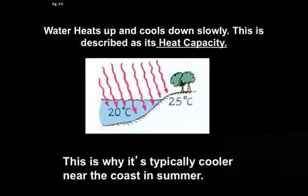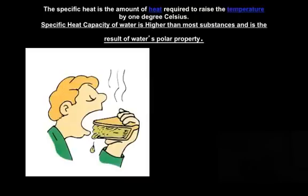Water takes a long time to heat up and it also takes a long time to cool down. Specific heat is responsible for the heat capacity of water. The specific heat is the amount of heat required to raise the temperature of a substance by 1 degree Celsius. Specific heat capacity of water is higher than most substances and is due to the result of water's polarity. Solid land has lower heat capacity than liquid water. In the case of the pie here, the crust has less water than the filling, so the crust cools down much more quickly.